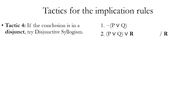Tactic four: if your conclusion is a disjunct — one part of a disjunction — try using disjunctive syllogism. The conclusion here is R, the second disjunct of the disjunction in line two. Line one is the negation of the first disjunct of line two, so the rule fits the pattern and we can apply disjunctive syllogism with lines one and two.